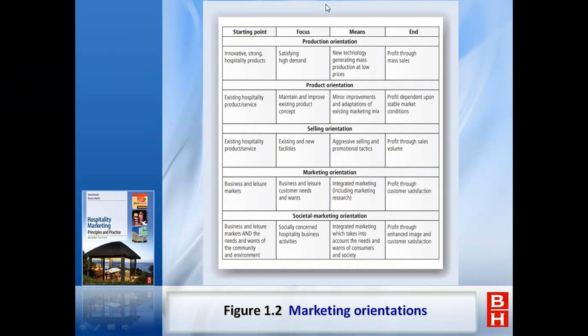When the first concept was the production concept orientation, we need to focus on innovative, strong hospitality products, satisfying the high demand of customers, focusing on new technology, and generating mass production at lower prices. In production orientation, when we book all the rooms, ultimately profit will come — even dropping the price. We produce in mass, ultimately lower prices. The profit comes through mass sales: produce more, cost drops, you sell more, you earn the profit. Happy days.